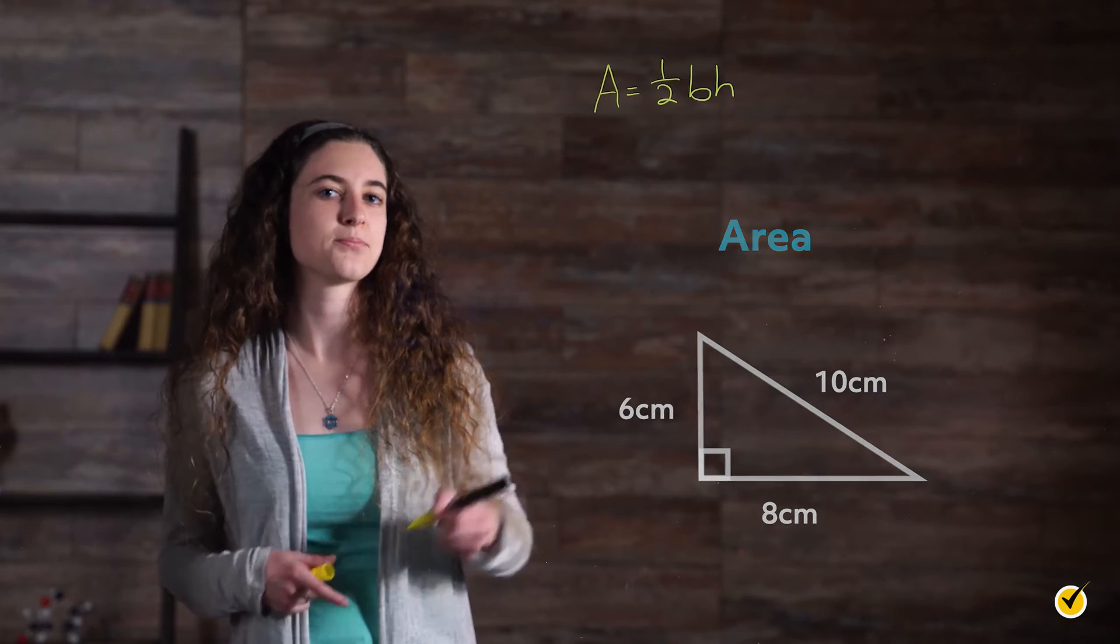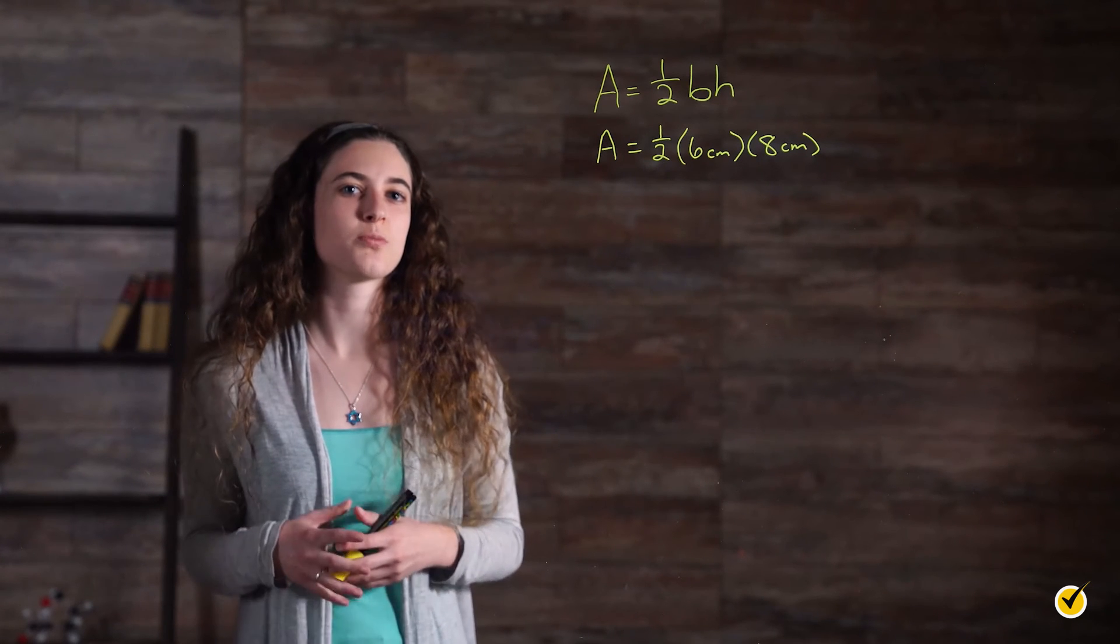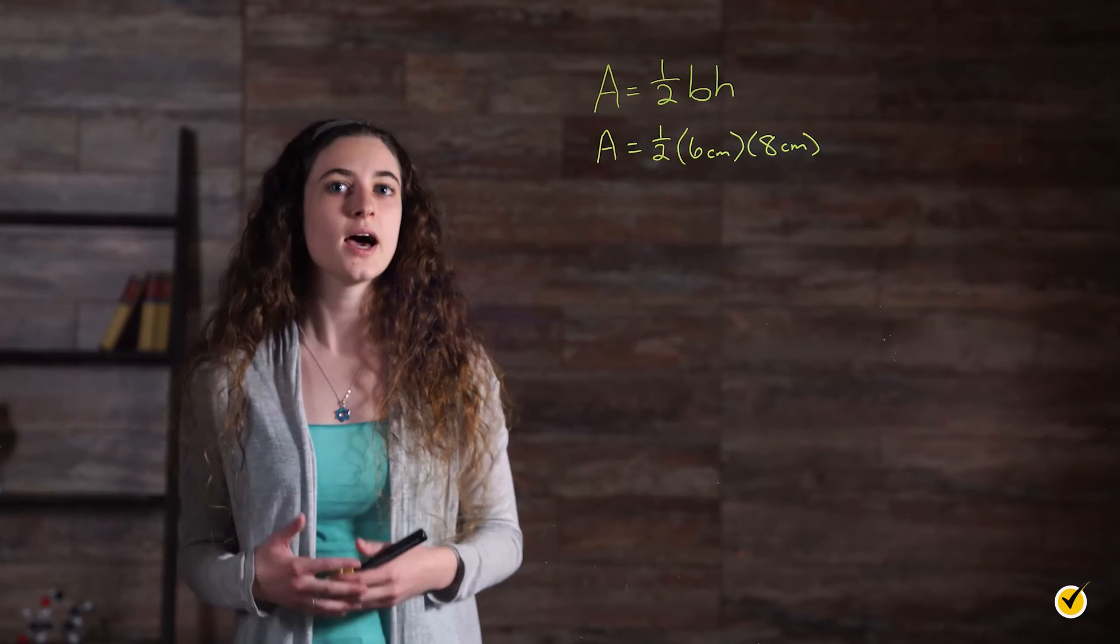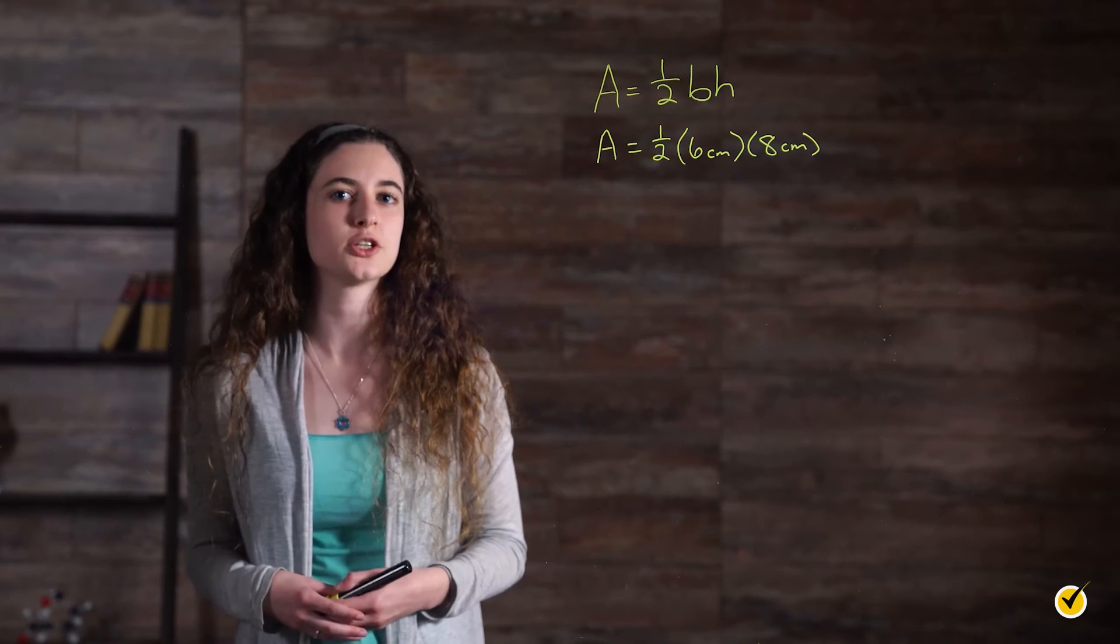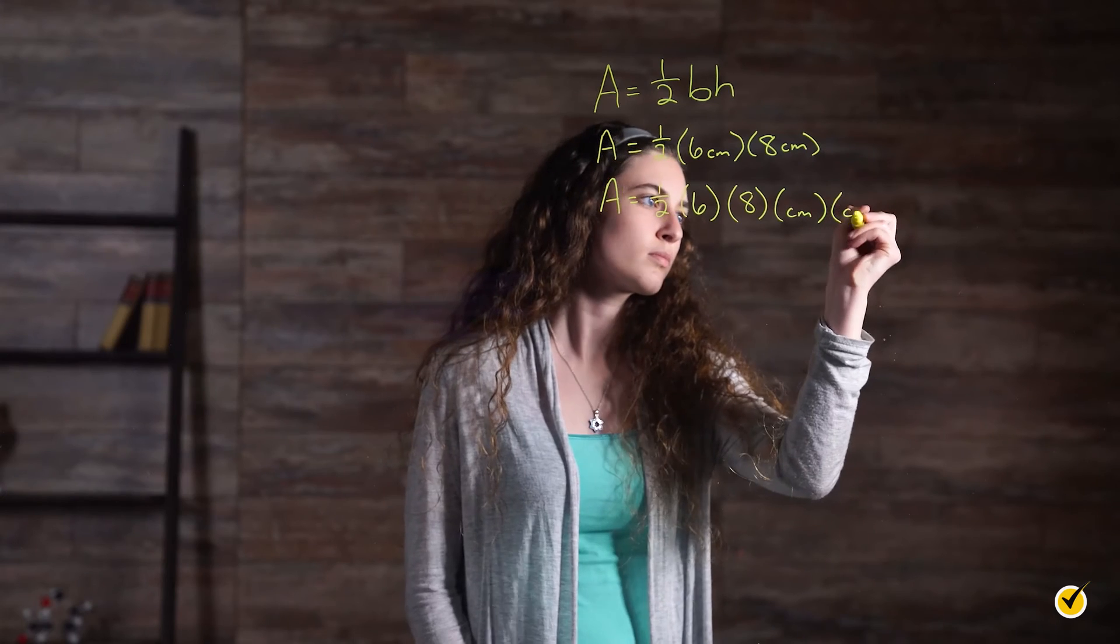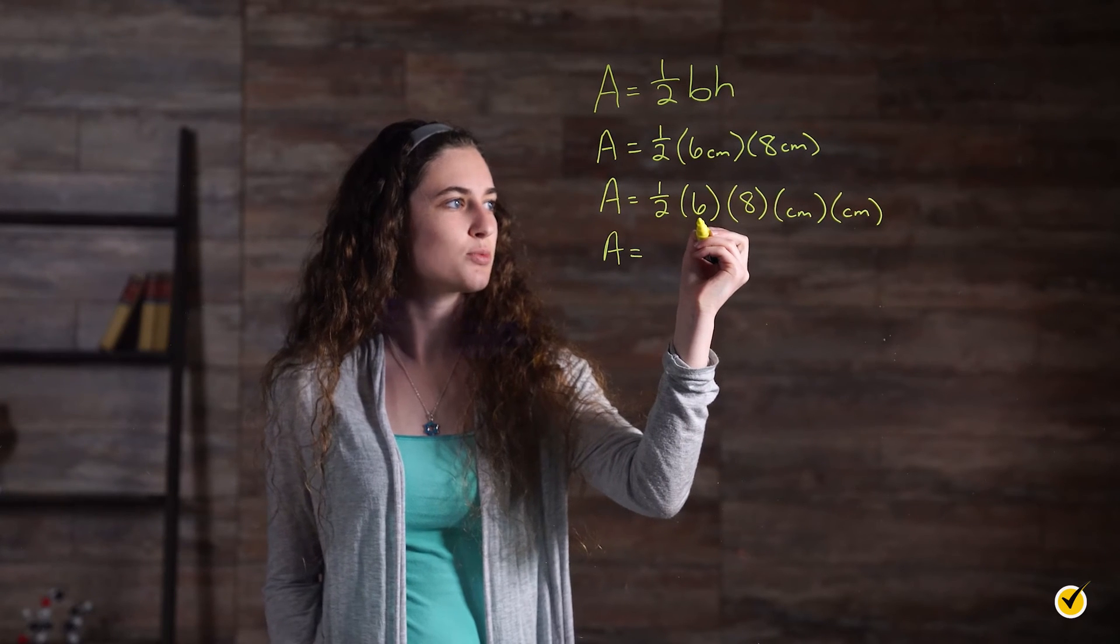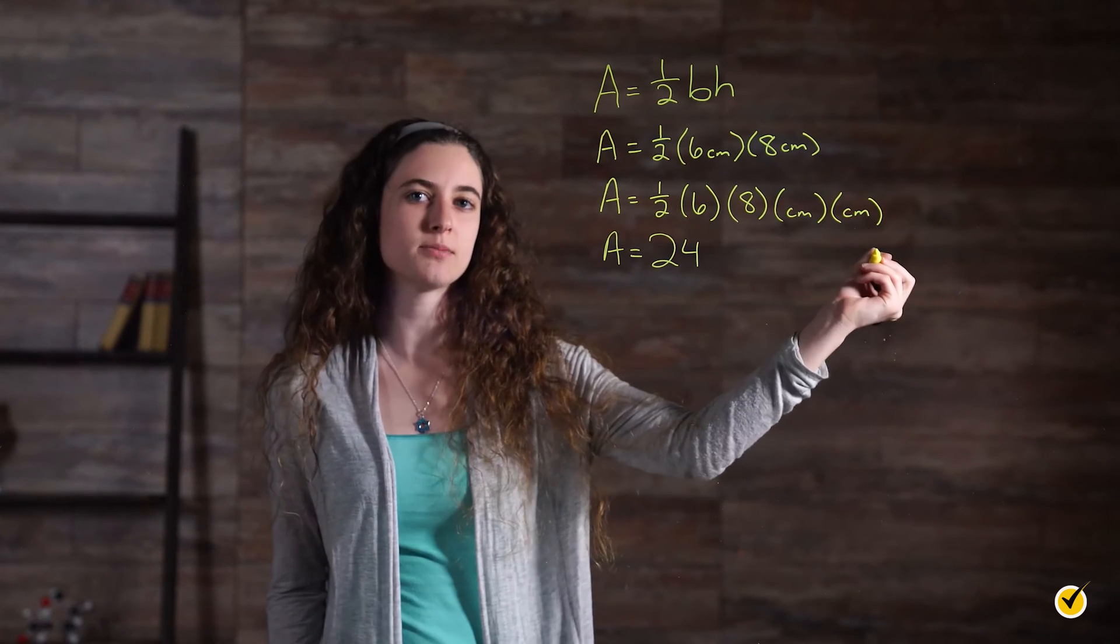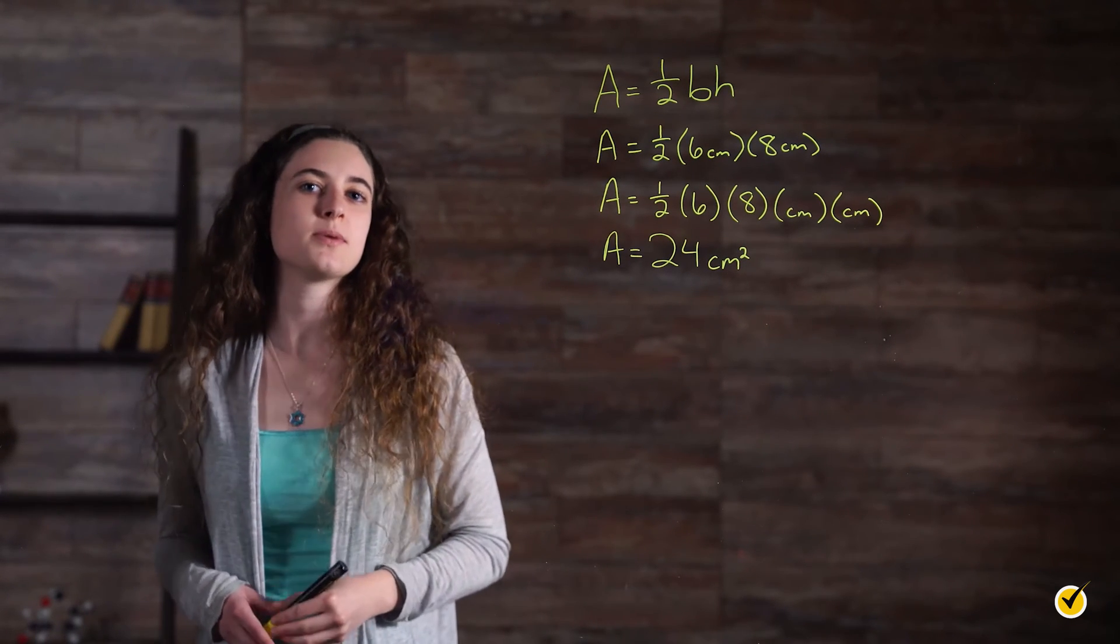It's always a good idea to substitute with parentheses to help keep things organized. We've even left the units in so that we can see what will happen with them. At this point, we only have multiplication left to do. So according to the commutative property of multiplication, we can rearrange before multiplying. Now let's solve this. Area equals 1 half times 6, which is 3. 3 times 8 gives you 24. And centimeters times centimeters gives you centimeters squared. So we end up with our area as 24 centimeters squared.